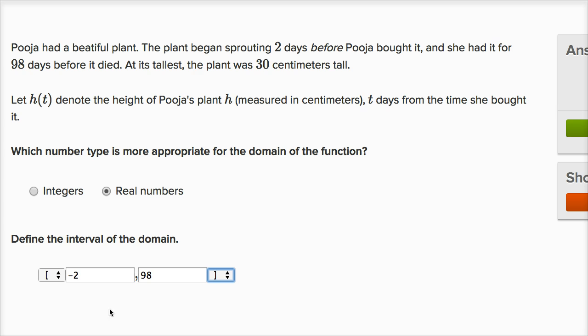So t would be a member of real numbers such that it is a member of this interval. T could be negative two. You could say negative two is less than or equal to t, which is less than or equal to 98. Let's check our answer. Got it right.